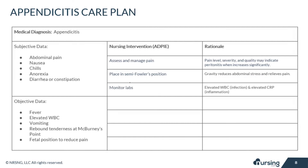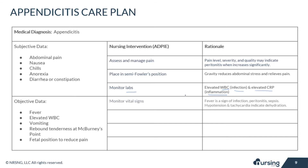Monitor the patient's lab values, especially the white blood cells, which will determine infection, and CRP, because elevated CRP will show you that there's some inflammation going on. Monitor your patient's vital signs — fever is a sign of infection, peritonitis, and even sepsis.